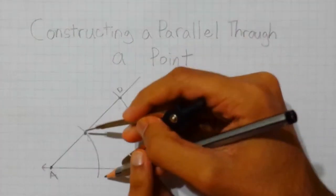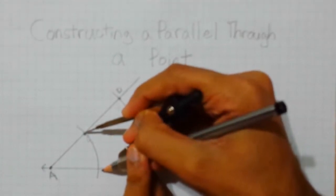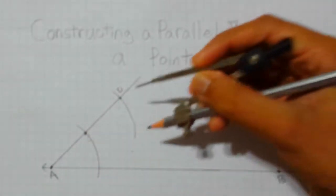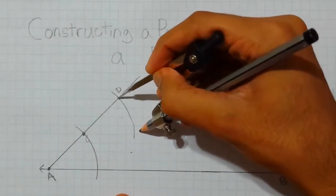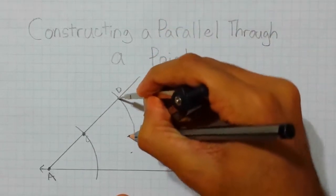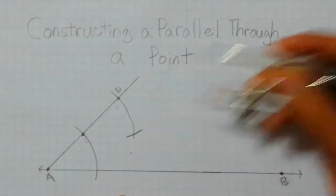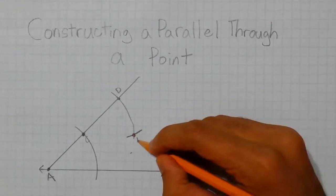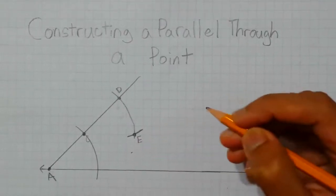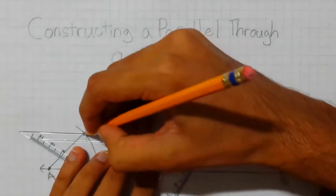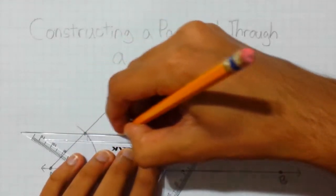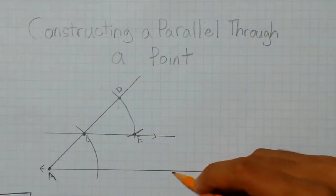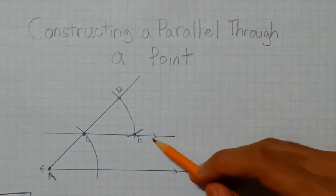Then we will measure the distance between point C and this intersection. Using the same distance, we will move it over to point D and draw another arc that intersects this one. We can label this point of intersection point E. Then by connecting points C and E, we've made two parallel lines: AB and CE.